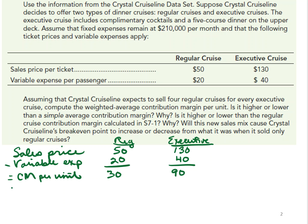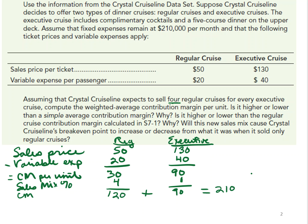Now we look at the sales mix percentage — how much of each item they expect to sell. They believe they will sell four regular cruises to every one executive cruise. So we take $30 times 4, giving us $120 in contribution margin, versus $90 for an executive cruise. To calculate the weighted average contribution margin, we take the total contribution margin of $120 plus $90, which equals $210, and divide by 5 (the total sales mix units: 4 plus 1). That gives us a weighted average contribution margin of $42.